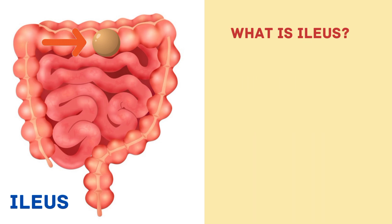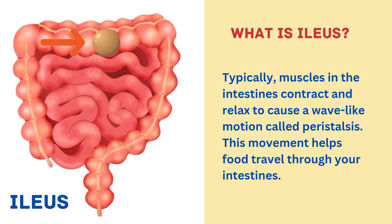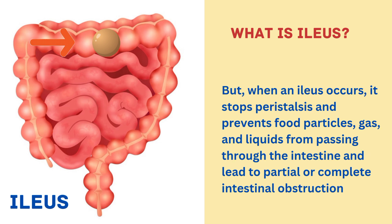What is ileus? Ileus, also called gastrointestinal atony, is the inability of your intestine to contract normally, leading to a build-up of stomach contents in part of the intestine. Typically, muscles in the intestines contract and relax to cause a wave-like motion called peristalsis, which helps food travel through your intestines. But when ileus occurs, it stops peristalsis and prevents food particles, gas and liquids from passing through the intestines, leading to partial or complete intestinal obstruction.